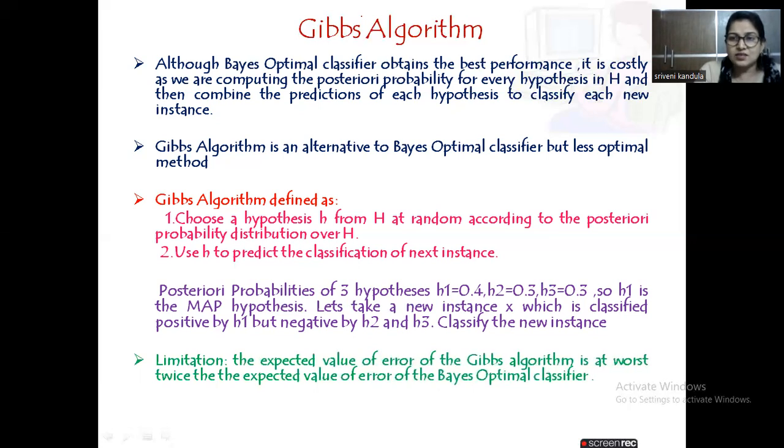Usually, how do we calculate the error? The difference between what we have calculated minus the real value. The difference between the actual minus predicted. Error is always calculated as the difference between actual minus predicted value.